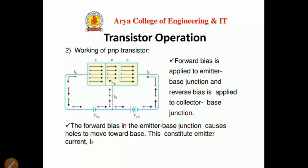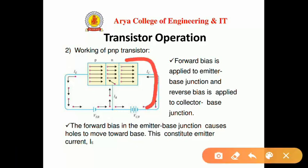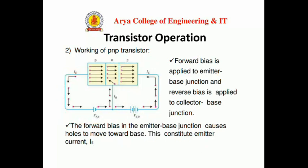Similarly, for the PNP transistor, the emitter-base junction is forward biased — P is connected to the positive terminal and N to the negative terminal. The second junction is reverse biased. The forward biasing of the emitter-base junction causes holes to move towards the base, constituting the emitter current. The basic difference between NPN and PNP is the type of carriers — electrons or holes — but the working of both transistors is the same.